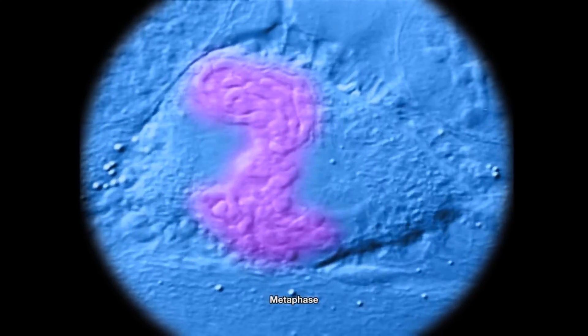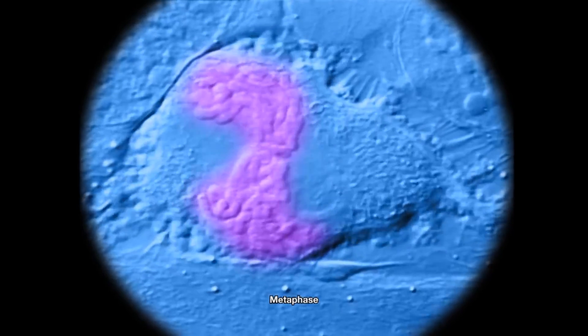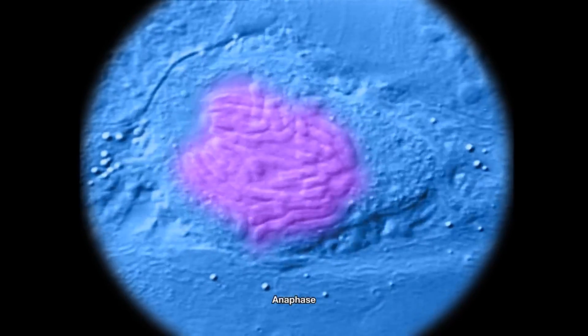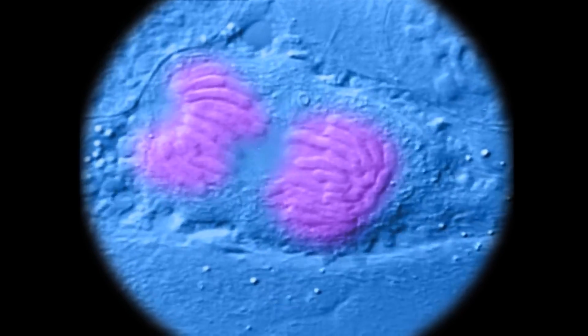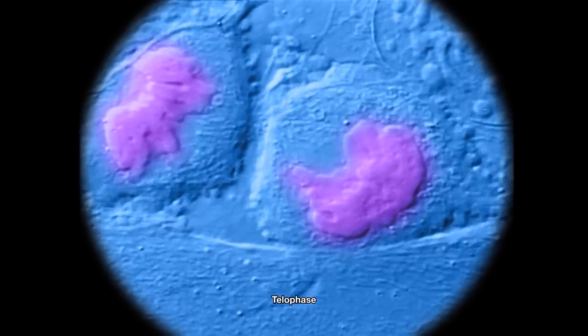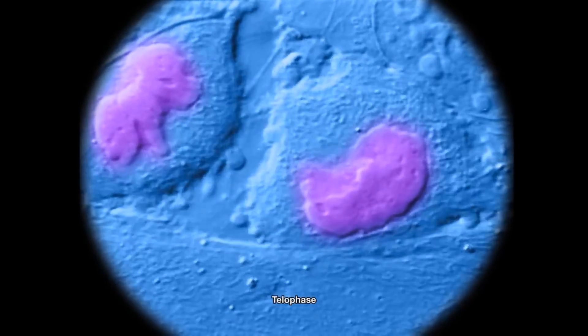The chromosomes are arranged in the middle of the cell before being pulled apart, with identical sets of DNA going to each side. The cell then splits down the middle, creating two new daughter cells.